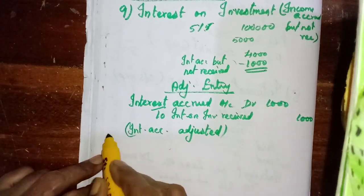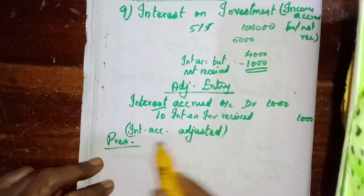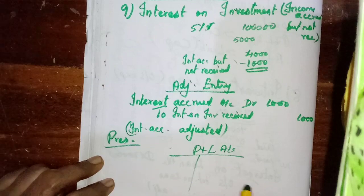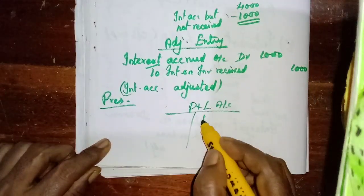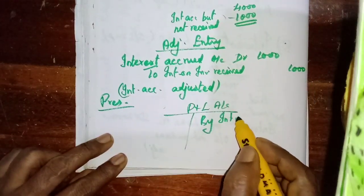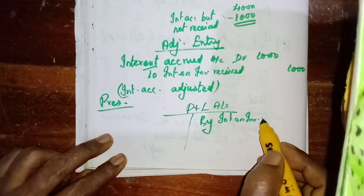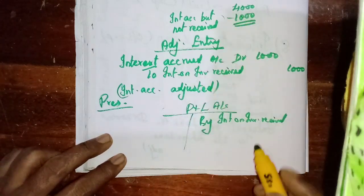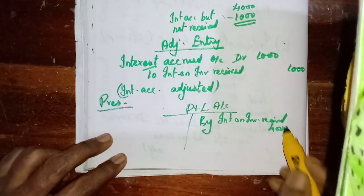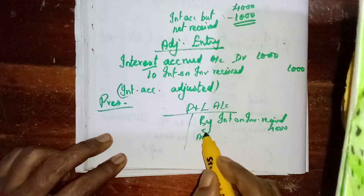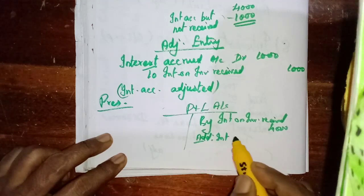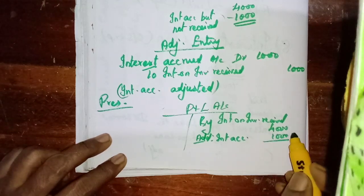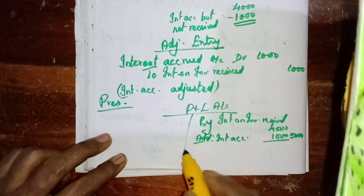Now the presentation. Where will it appear? In the profit and loss account, it is an income, so on the income side: By Interest on Investment Received — 4,000 from trial balance — add Interest Accrued but Not Received 1,000 — total 5,000 to show.